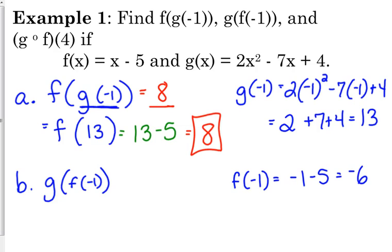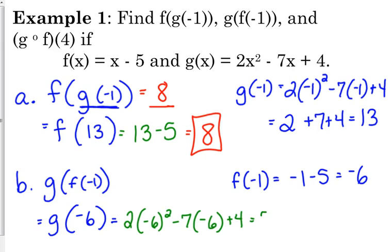We're not plugging the same number in the g anymore. We're plugging negative 6 in the g. So now we plug negative 6 into our g function. So let's see here. Negative 6 squared is 36 times 2 is 72 plus 7 times 6 is 42 plus 4. So that's what? 114, 118.